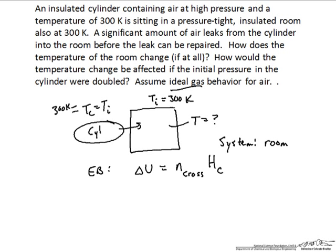We can express this delta U in terms of intensive internal energy. That will be the number of moles finally in the room times the internal energy in the room at the final state, minus the number of moles initially in the room times the initial internal energy per mole of gas in the room. The number of moles that have crossed into the room is simply equal to n_final minus n_initial.